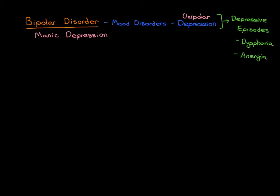Anergia is about energy levels — how much you want to get out of bed and go do things. If you have very low energy, you might no longer want to go out and do things; instead you might want to remain at home, stay in bed, or lie around on the sofa. In a depressive episode you have this period of time where your mood is low and your energy level is low.